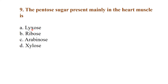The pentose sugar present mainly in the heart muscle is — option A: lyxose, option B: arabinose, option C: xylose. The best answer is lyxose. Lyxose is the pentose sugar present in the heart muscles.